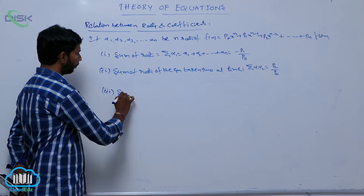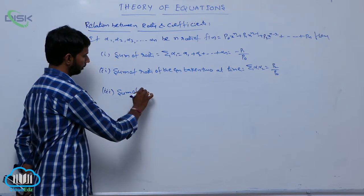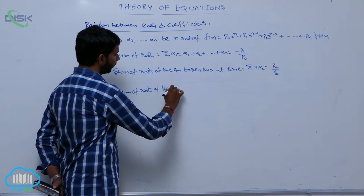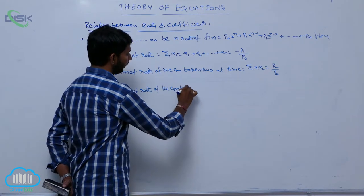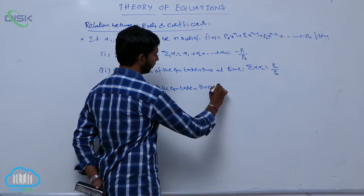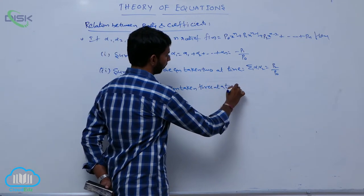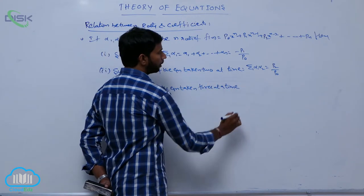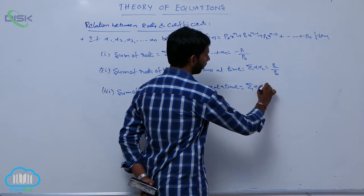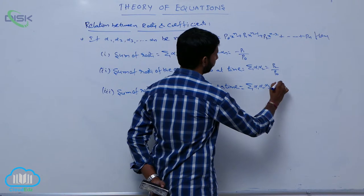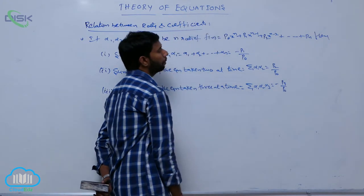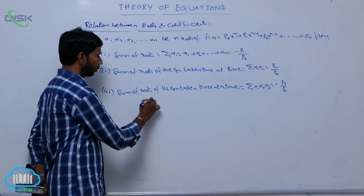Next, the sum of roots of the equation taken three at a time, that is sigma alpha 1 alpha 2 alpha 3, is equal to minus p3 by p0, and so on.